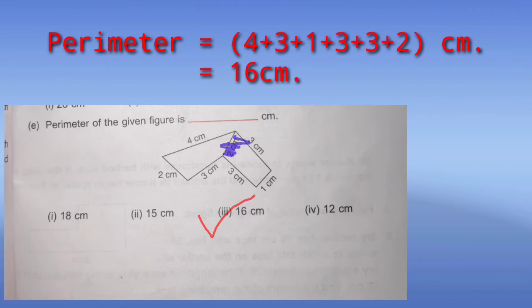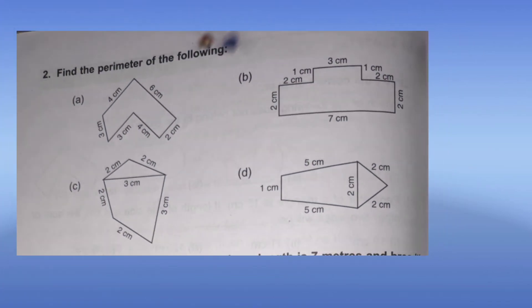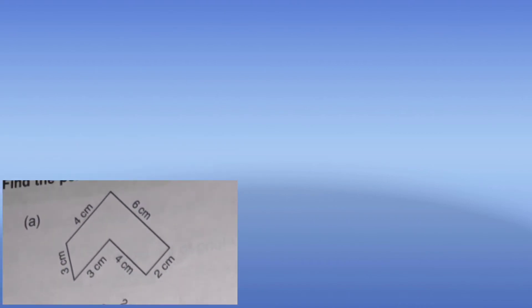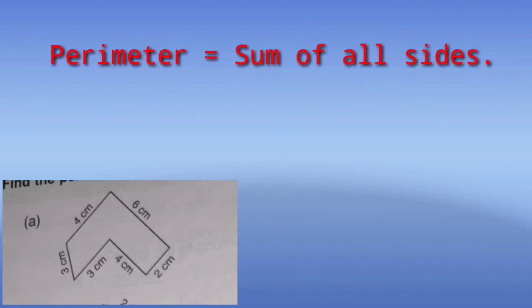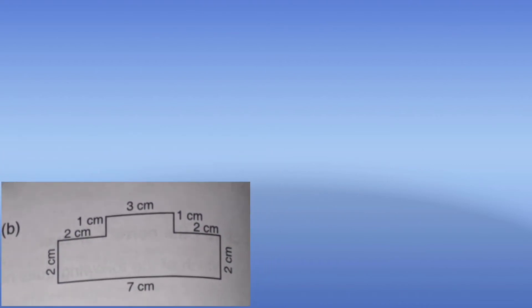Now we are going to do the subjective questions. Question number 2: we are given some figures and we need to find their perimeters. In the first part, there is no line in the middle — all lines are boundary lines. So we add: 3 + 4 + 6 + 2 + 4 + 3 = 22 cm.